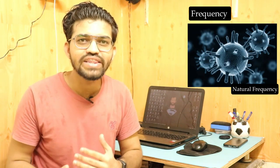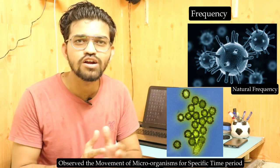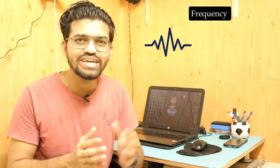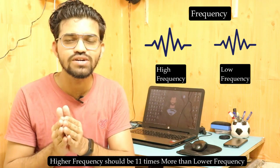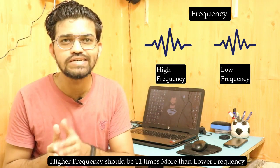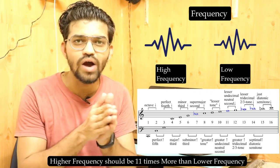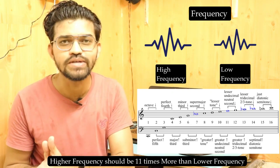Scientists began researching this device, looking for exact frequencies that match those of living microorganisms. They tried different frequencies and observed the movement of microorganisms under a microscope over specific time periods. After extensive research, they found that two frequencies are required — one on the higher side and one on the lower side. The higher frequency should be eleven times larger than the lower frequency, which is called the 11th harmonic — a term musicians also use. When this 11th harmonic is introduced into the therapy device, small microorganisms begin to shatter like glass.